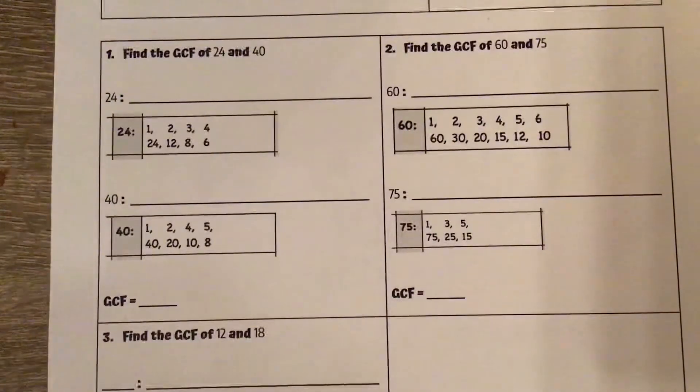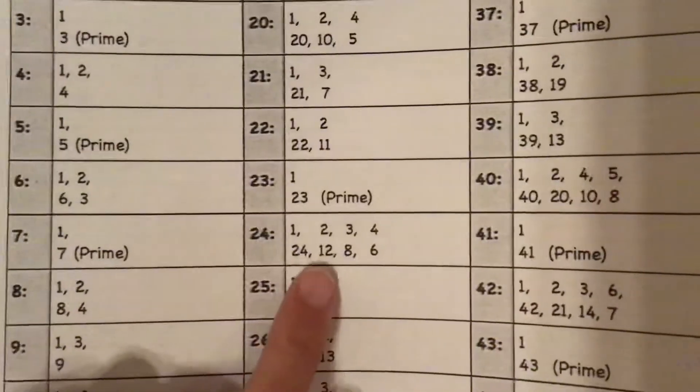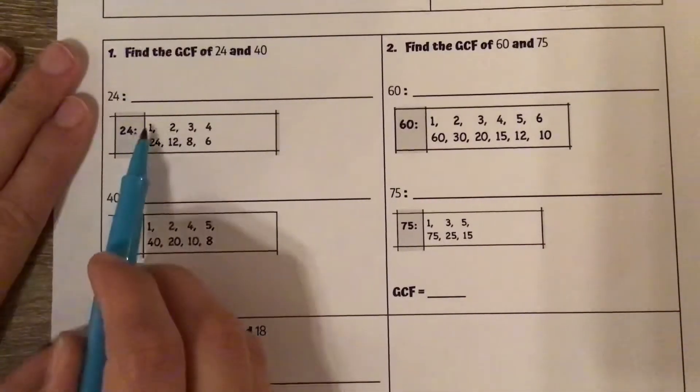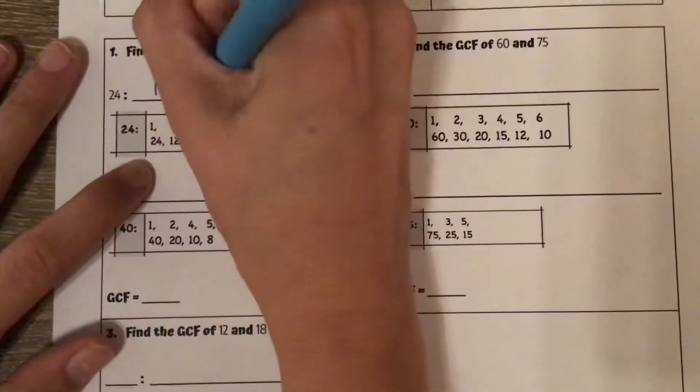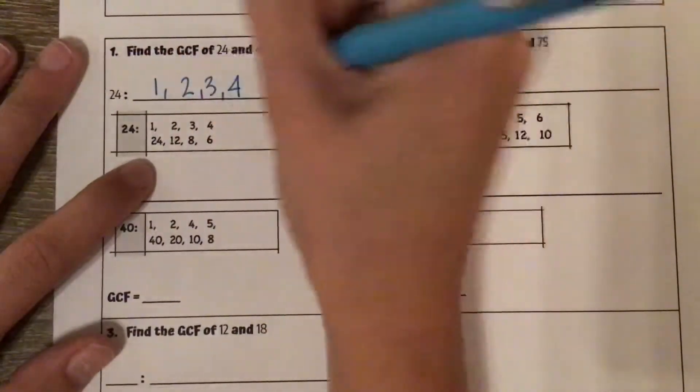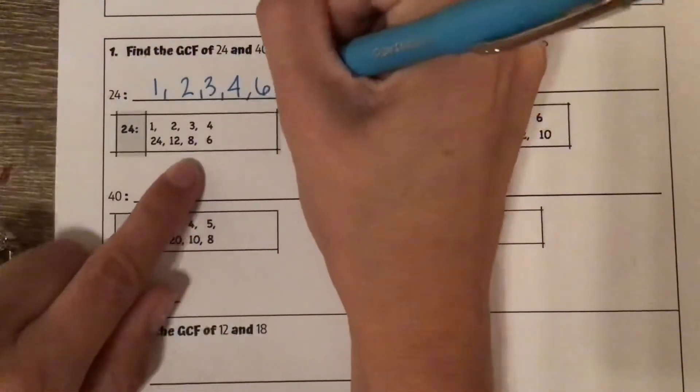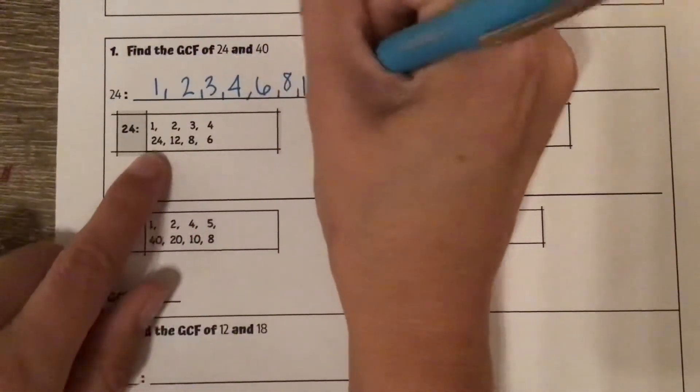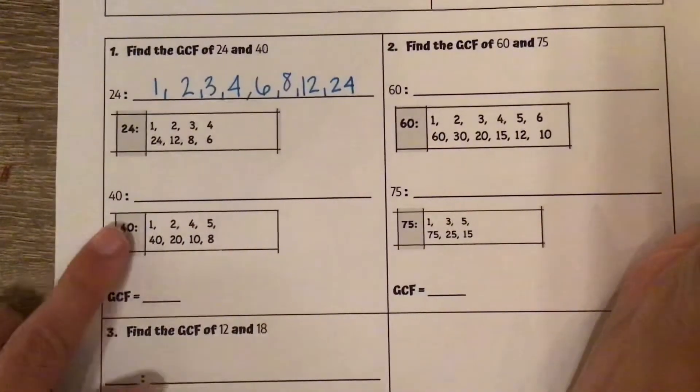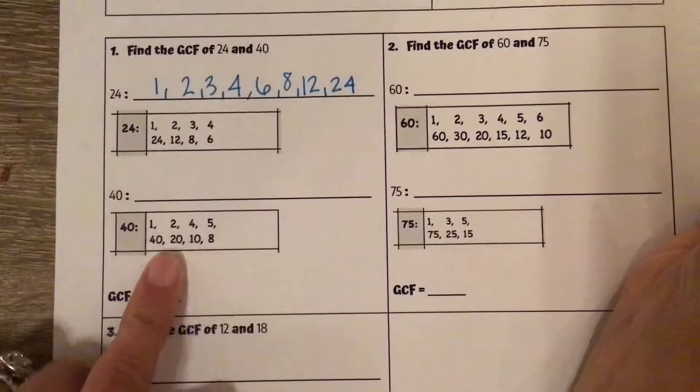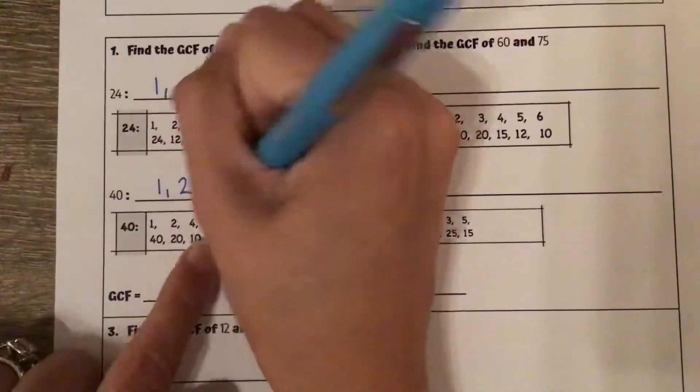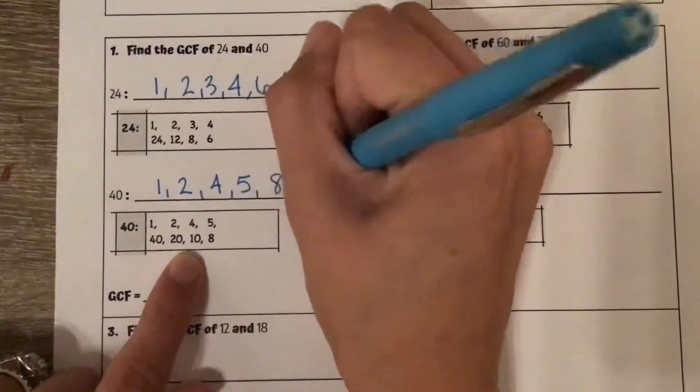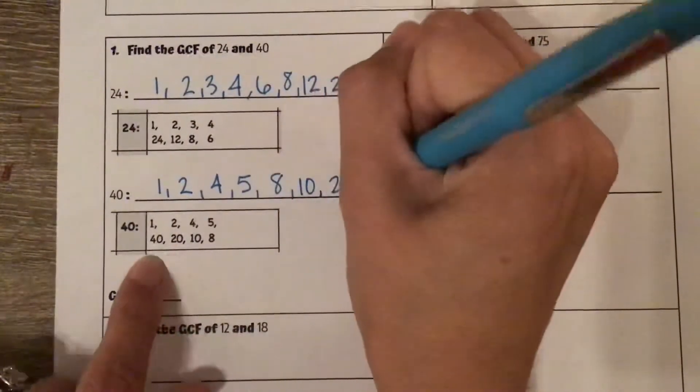So let's look at number one. 24. We already took a screenshot of 24 and all of its factors. Remember, I wrap around so it goes in order from least to greatest: 1, 2, 3, 4, 6, 8, 12, 24. We'll do the same thing for 40. I screenshotted the factors of 40 here: 1, 2, 4, 5, 8, 10, 20, 40.